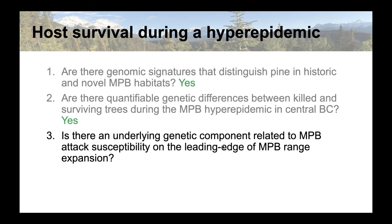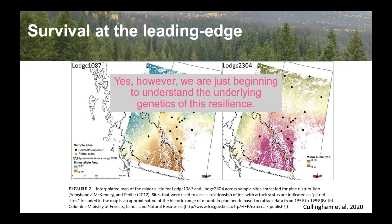Our third goal addresses whether there's an underlying genetic component related to attack susceptibility on the leading edge of expansion. These individuals can be in either the historic or naive range and are under different beetle pressure — not hyper epidemic behavior but more endemic beetle behavior in this expansion. The short answer is yes, there is. Kathy, Janice's lab, and I published two loci under selection in this region earlier last year and did some mapping to show those.